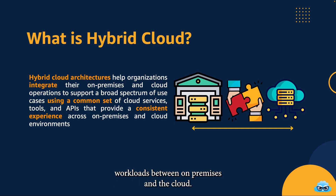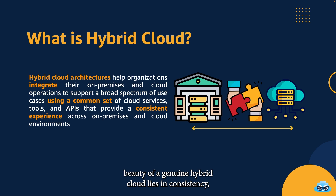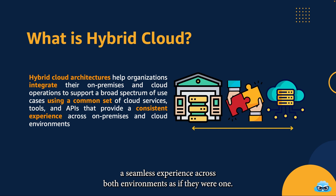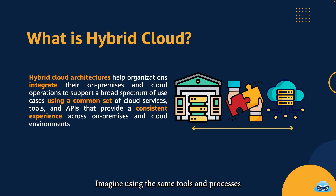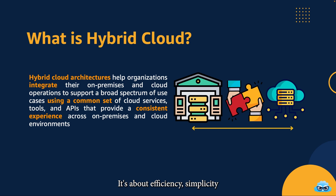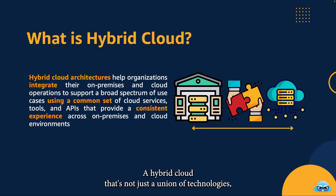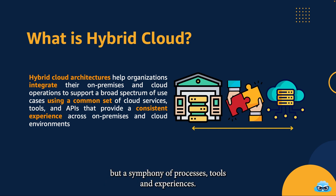But the magic lies in their integration. Imagine seamlessly transferring workloads between on-premises and the cloud — your applications can scale up during peak times and come back on-premises when the surge subsides. The real beauty of a genuine hybrid cloud lies in consistency: a seamless experience across both environments, as if they were one. Imagine using the same tools and processes no matter where your applications are hosted. It's about efficiency, simplicity, and streamlining operations. As we delve deeper into VMware Cloud on AWS, remember the ultimate goal is that harmonious blend — a hybrid cloud that's not just a union of technologies, but a symphony of processes, tools, and experiences.